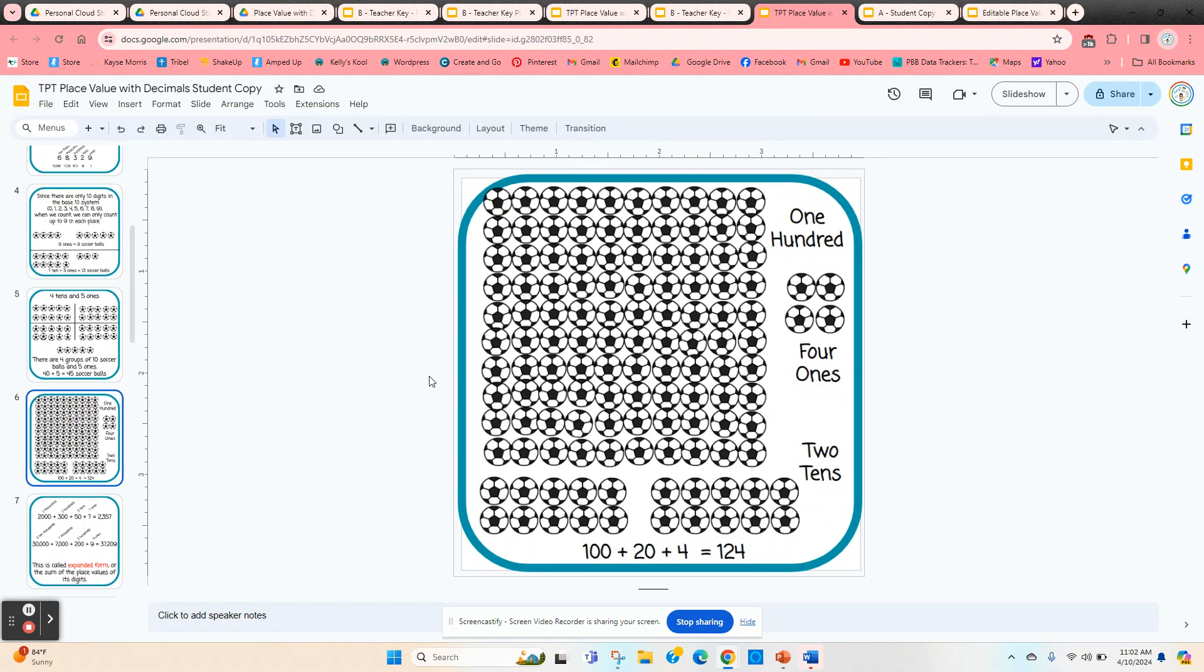We can go even higher, up to 100. So 100, 10 by 10, two tens, and four ones would give us 124.